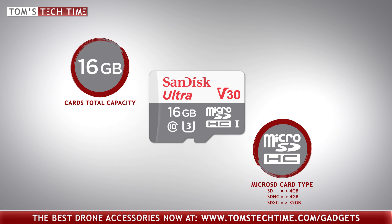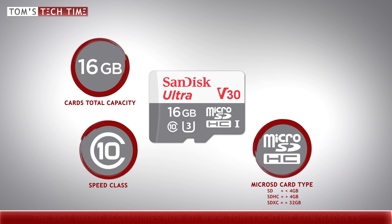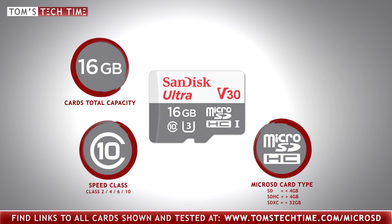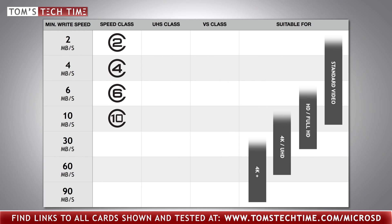Most microSD cards have an older speed rating printed onto them — a number inside a circle. The speeds are divided into classes: class 2, class 4, class 6, and class 10. The number addresses the minimum guaranteed read and, more importantly, write speed in megabytes per second. A class 10 card is therefore able to read and write with speeds of at least 10 megabytes per second. For filming in HD and shooting basic JPEGs, a class 6 card might be fine, but for full HD or 4K filming, burst shooting, and RAW photography, a class 10 card is required. Luckily, class 10 cards usually don't cost a lot of extra money — maybe a dollar or two compared to a class 6 card.